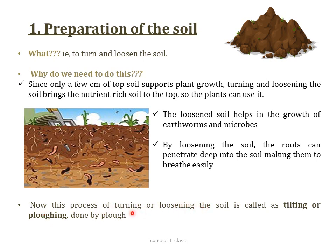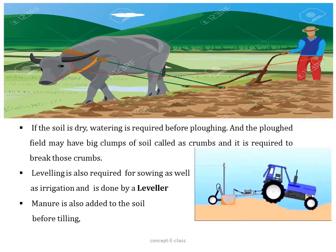The loosened soil also helps in the growth of earthworms and microbes, which are called the friends of farmers, and they in turn help in turning and loosening the soil. By loosening the soil, the roots can penetrate deep, breathe easily, and exchange gases. This process of turning or loosening the soil is called ploughing or tilling. If the field is dry, watering is required before ploughing. The ploughed field may have big clumps of soil called crumbs, which need to be broken using a leveller connected to a tractor. We also add manure to the soil before tilling to help in proper mixing.